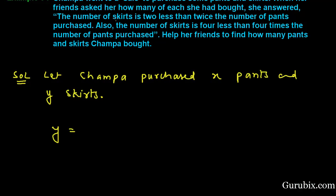We are given the number of skirts is 2 less than twice the number of pants purchased. Number of pants is X, twice of number of pants is 2X, 2 less, this means minus 2. So, this is our first equation.